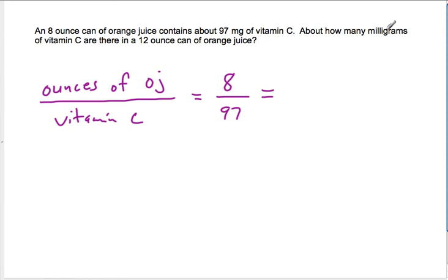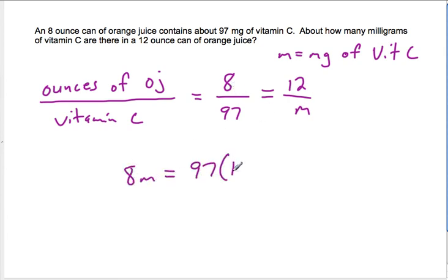That's going to equal how many milligrams of vitamin C, we'll call that m, for a 12-ounce can of orange juice. Using the cross-products property of a proportion, we'll see that 8 times m is going to equal 97 times 12.